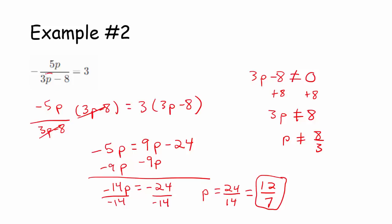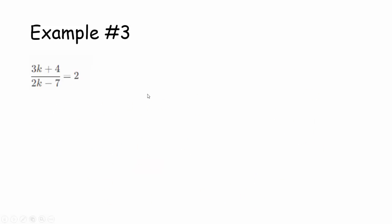When we're thinking about the denominator, all the denominators in the equation. Okay, let's look at our last example. The quantity 3k plus 4 divided by the quantity 2k minus 7. Let's rewrite that here.